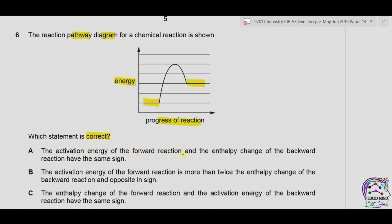Part A: the activation energy of the forward reaction and the enthalpy change of the backward reaction have the same sign. The activation energy for the forward reaction is the energy required by reactants to reach the transition state — it is positive. The enthalpy change of the backward reaction is negative, as we move from a high energy state to a low energy state. They do not have the same sign, so A is wrong.